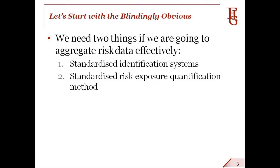Let's start with the blindingly obvious. We need two things if we are going to aggregate risk data effectively. The first is standardized identification systems — that is, the systems of coding we use to uniquely identify data. If we want to aggregate data spread across multiple systems in multiple locations by, for example, legal entity, we need to tag standardized legal entity identifiers, or LEIs, onto each item of data, so computers know which hierarchical aggregation paths the data should follow.